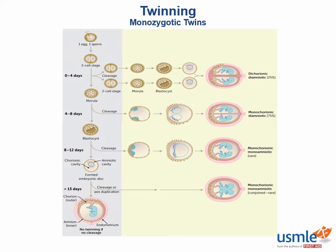Monozygotic twins, however, can share certain organs depending on when the embryo divided into two. In about 25% of cases, the embryo of monozygotic twins splits before the chorion is formed at day three, and these embryos will have their own placentas, chorions, and amniotic sacs, just like dizygotic twins. These are dichorionic, diamniotic.